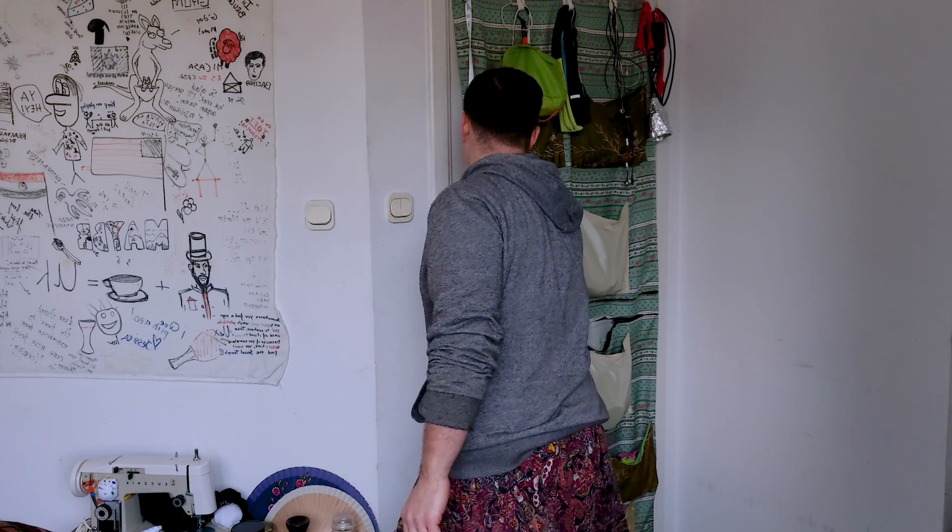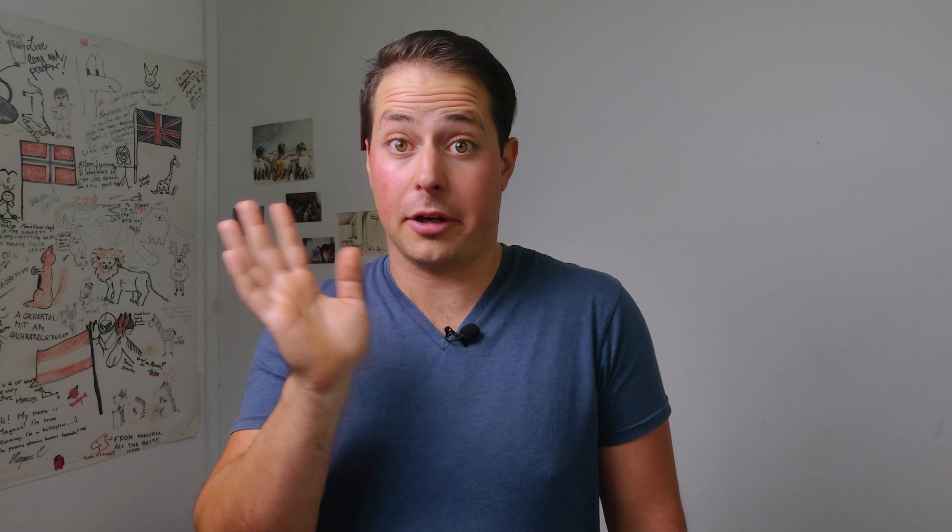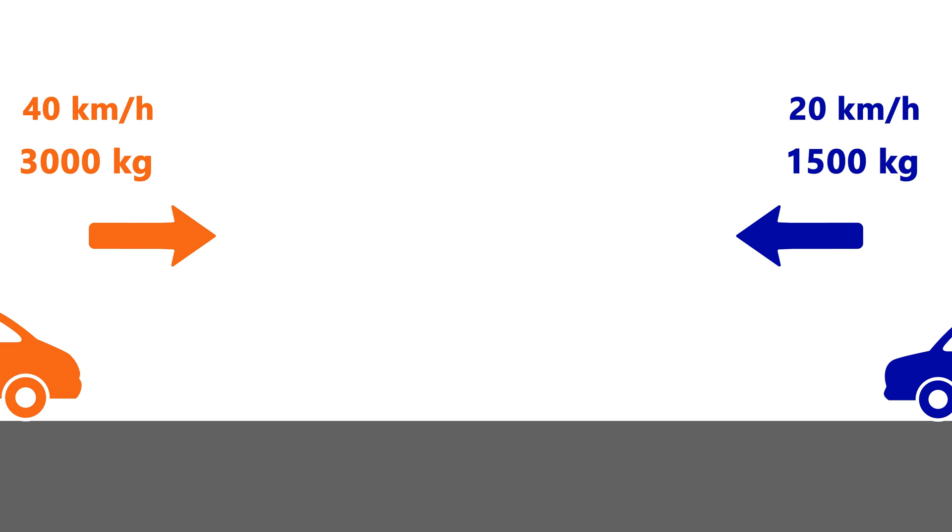And what happens if only one object is soft and the other one is hard? Like when you bump into a doorframe for example? Are you calling me soft? We can talk about a car crash if you prefer. Let's imagine a car weighing 3000 kilograms going from the left to the right at 40 kilometers per hour. Another car with half the mass is moving at 20 kilometers per hour in the opposite direction. So the inevitable happens.